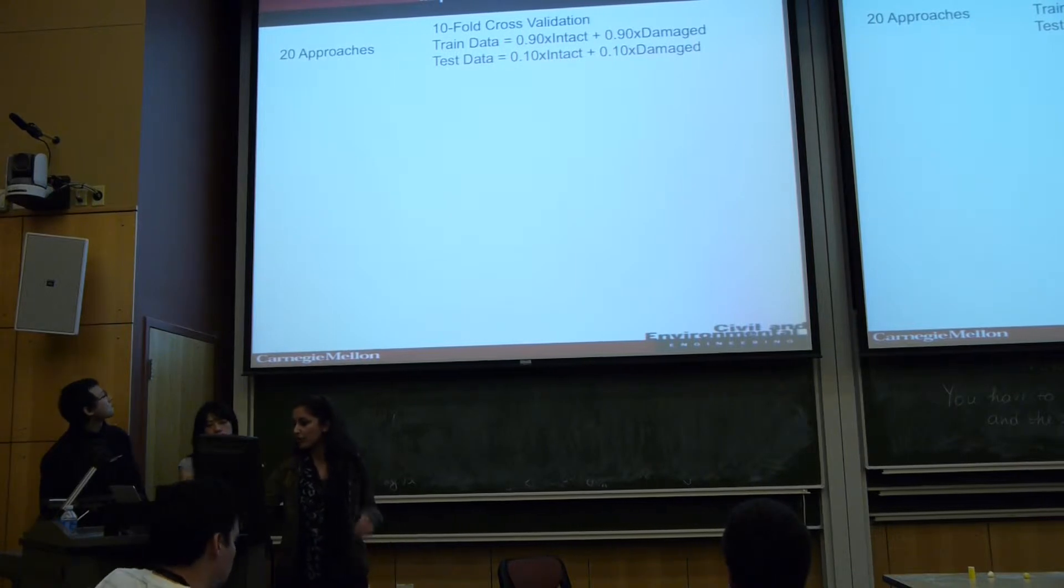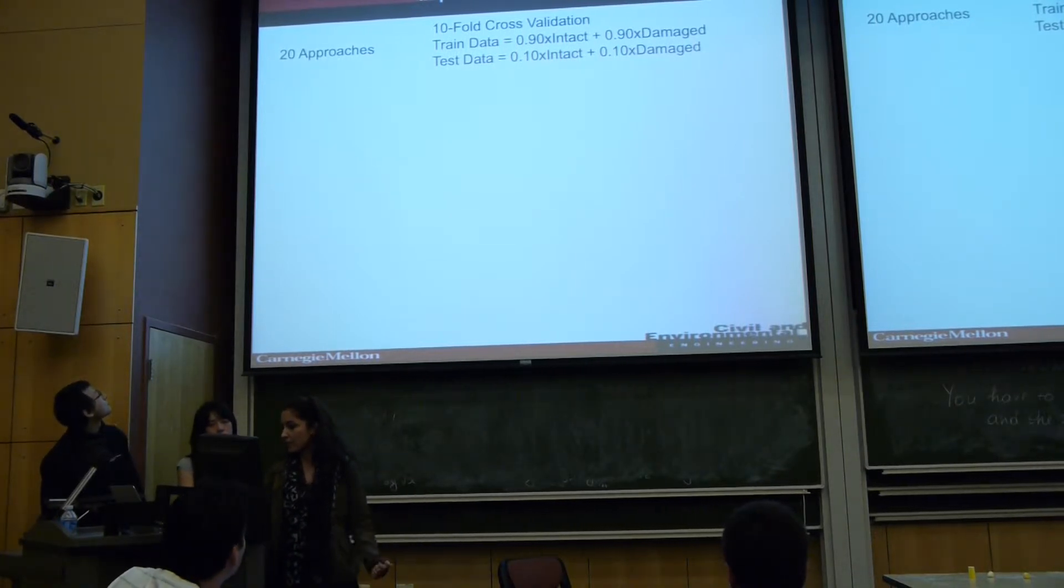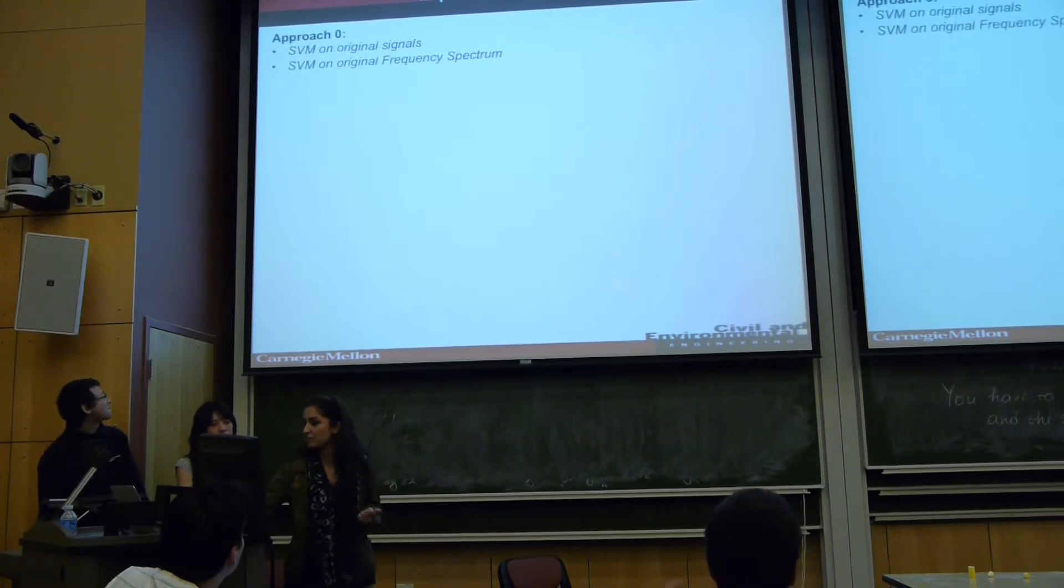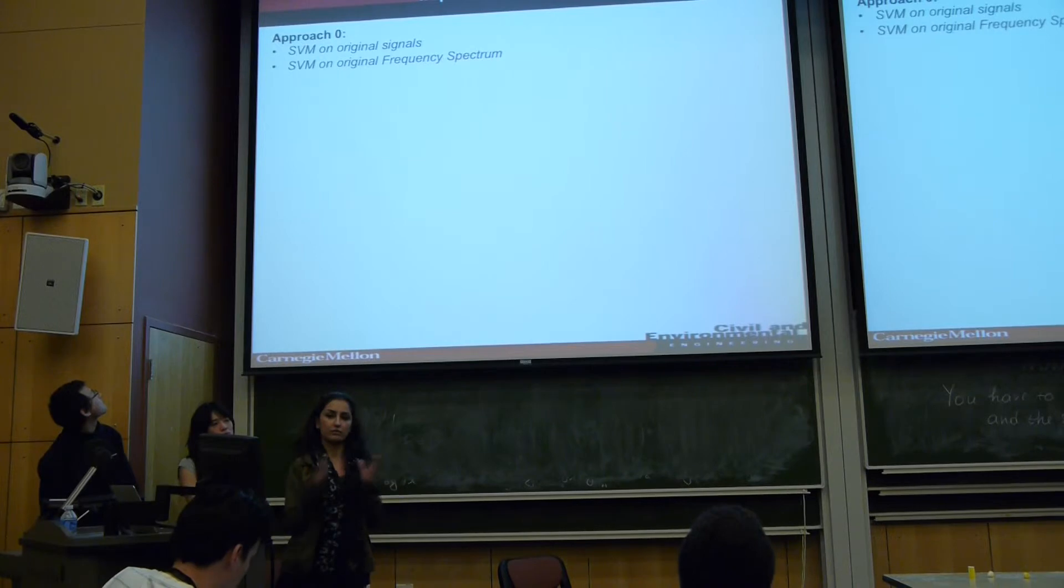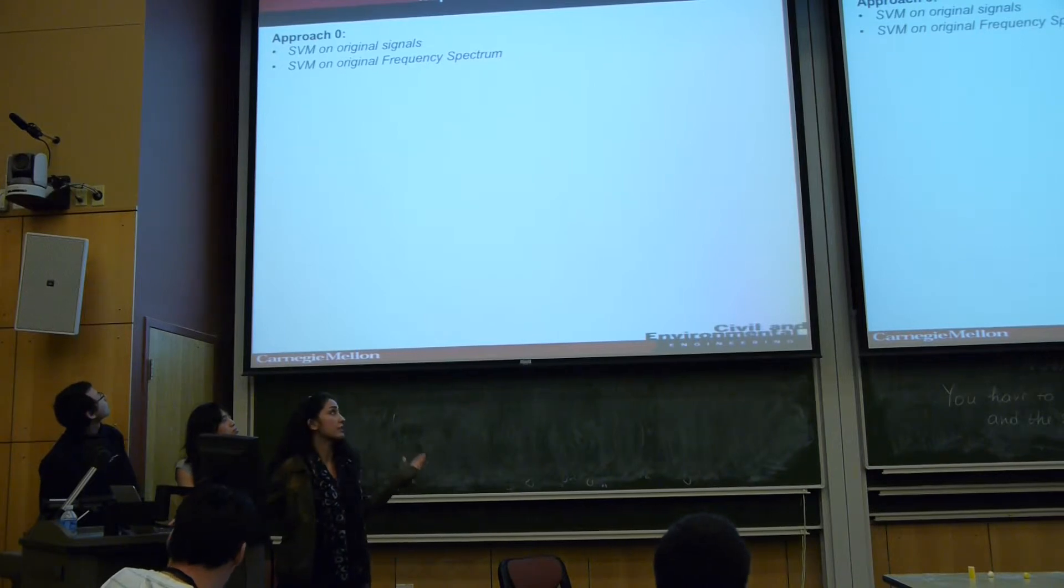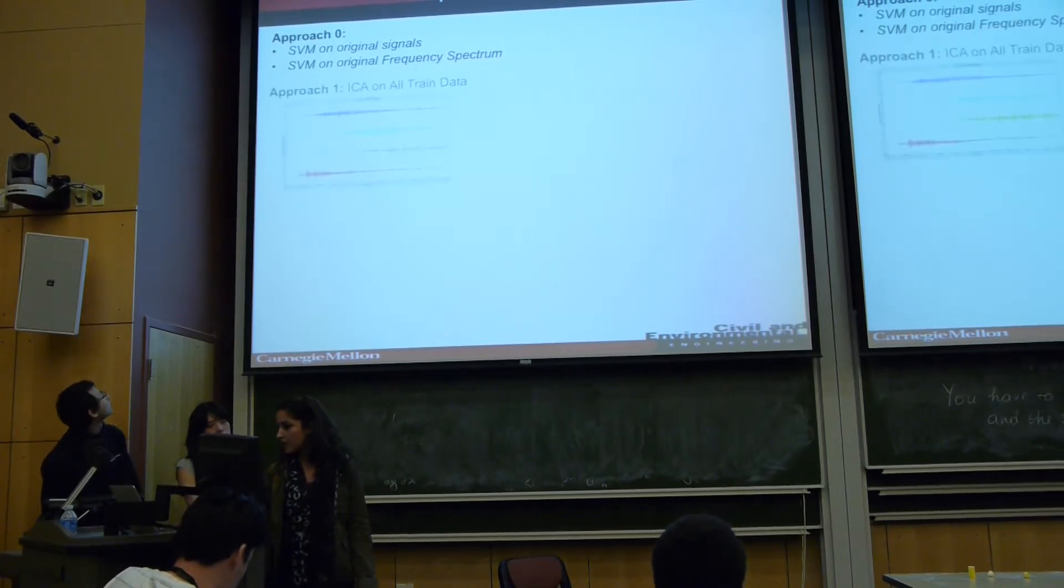So several approaches using ICA, we have followed two of them. The average zero that I call it is just kind of a baseline. So we just said, let's assume that we don't do anything. We just did SVM on our original signal and on the frequency spectrum. Of course, as was expected, this didn't turn out very well.